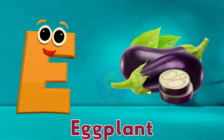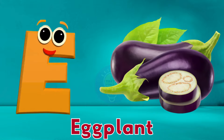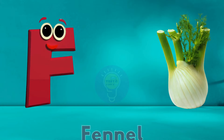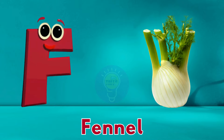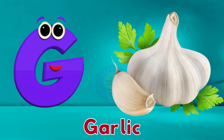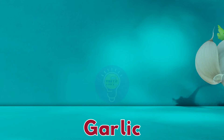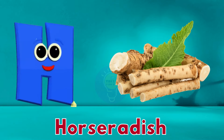E is for eggplant, eggplant. F is for fennel, fennel. G is for garlic, garlic. H is for horseradish, horseradish.